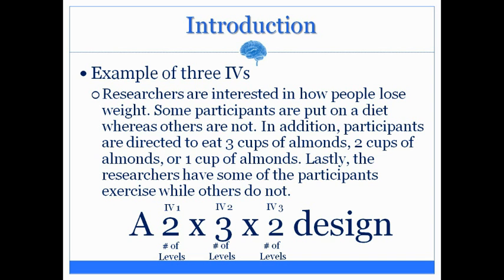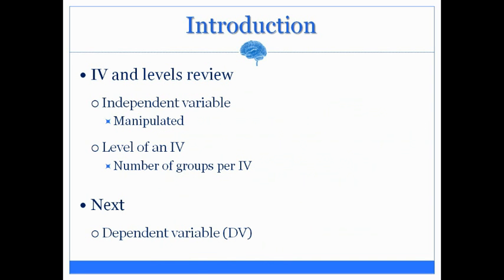A two-by-three-by-two has three independent variables, and the levels of each are stated in that notation. To recap: an independent variable is whatever is manipulated in an experiment. The level of an independent variable is the number of groups that make up that independent variable, and that ranges from two to limitless — the minimum is two, and the maximum is limitless. The next series of slides is going to describe what a dependent variable is, which is absolutely crucial to understand and will put together what an experiment is and the importance of the independent variable and its levels.